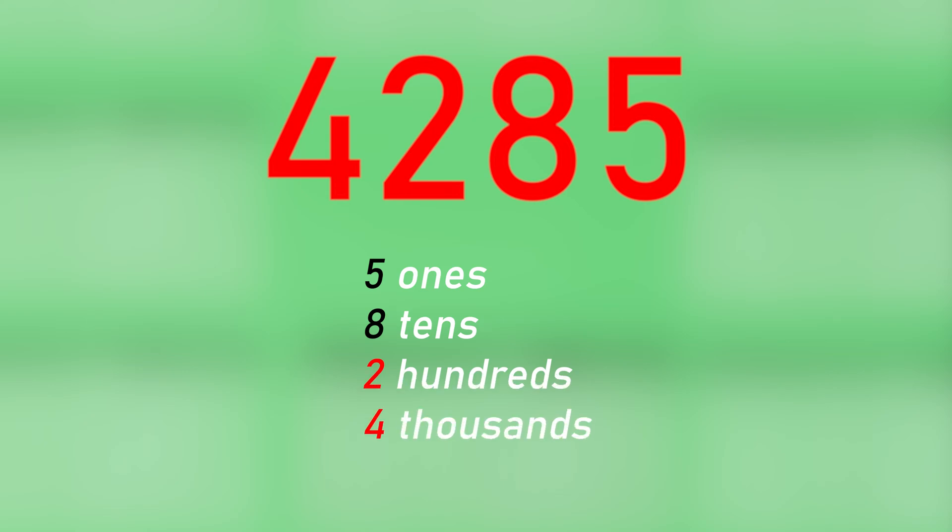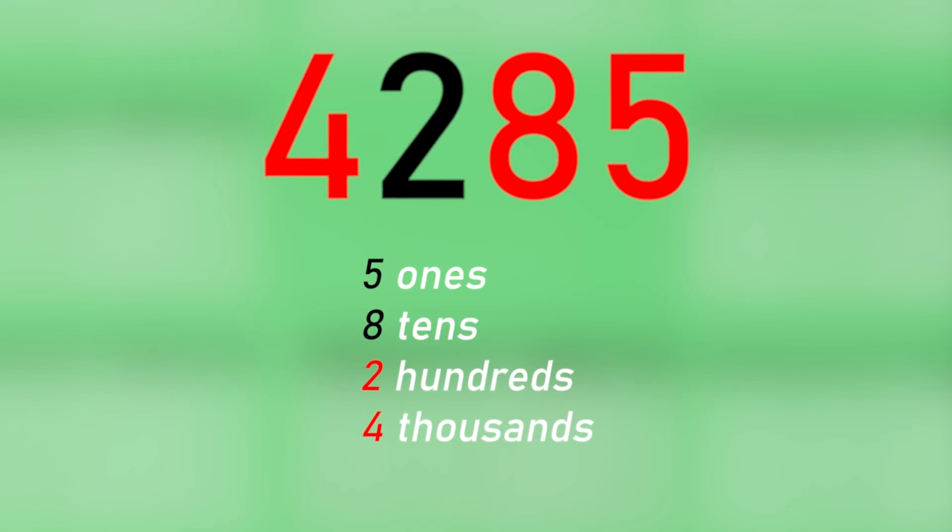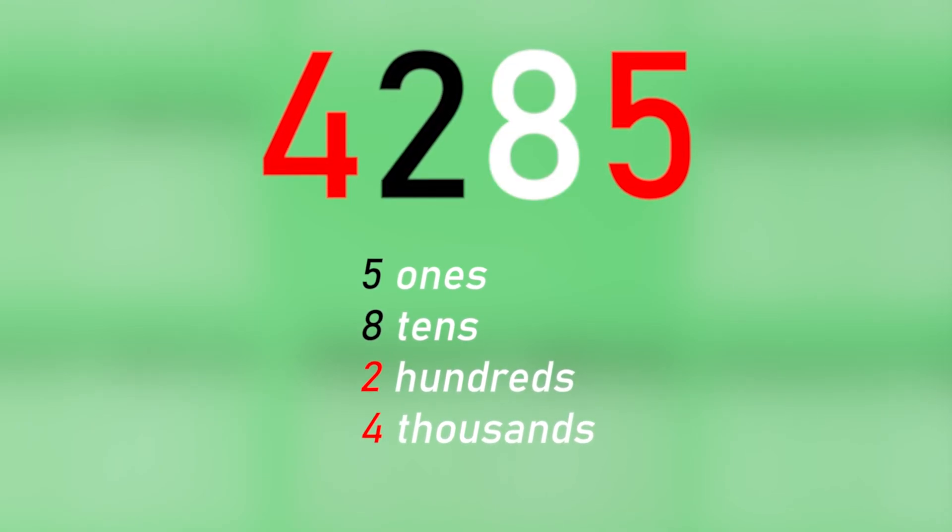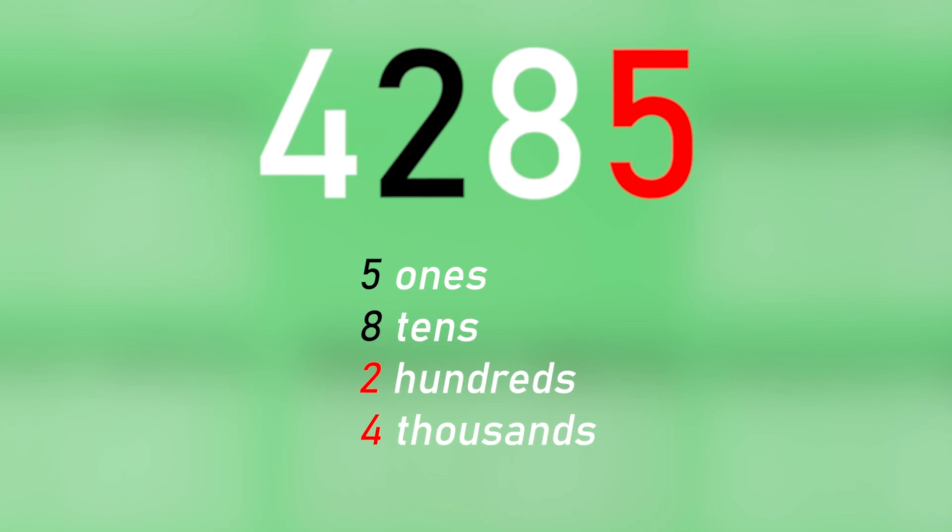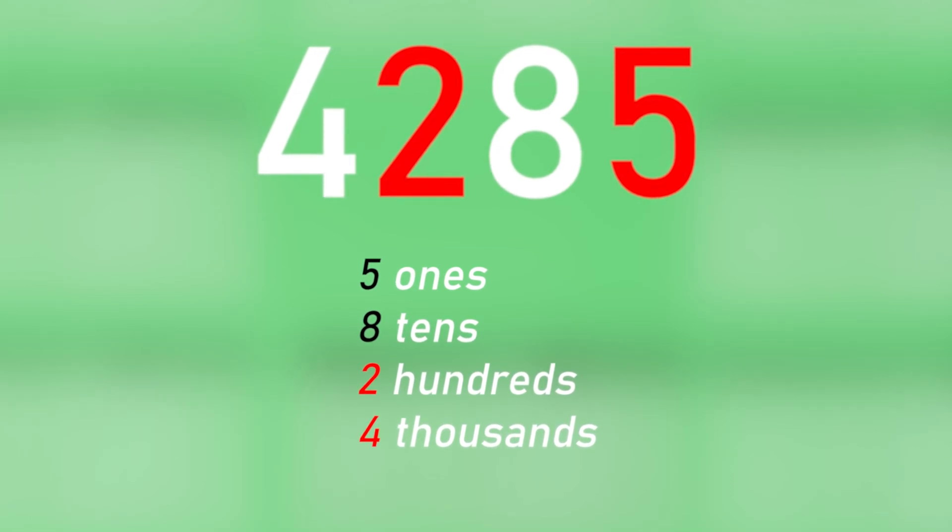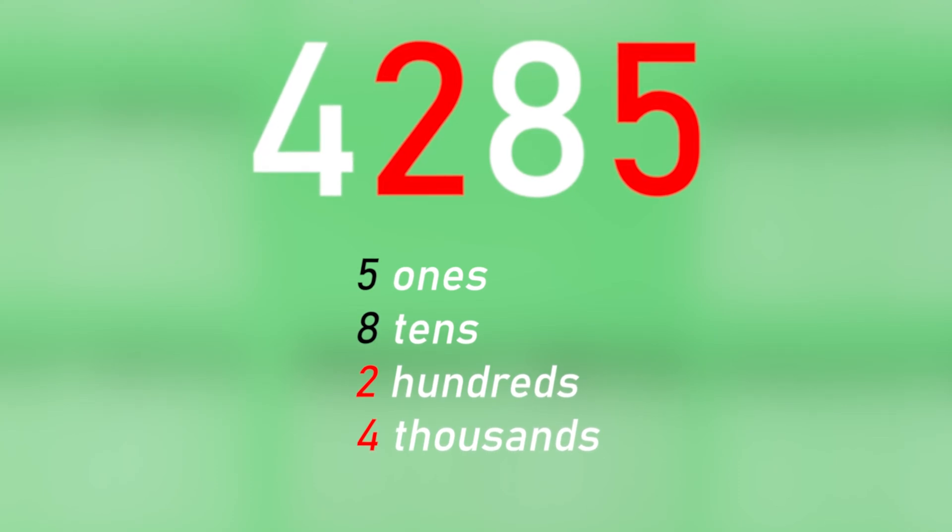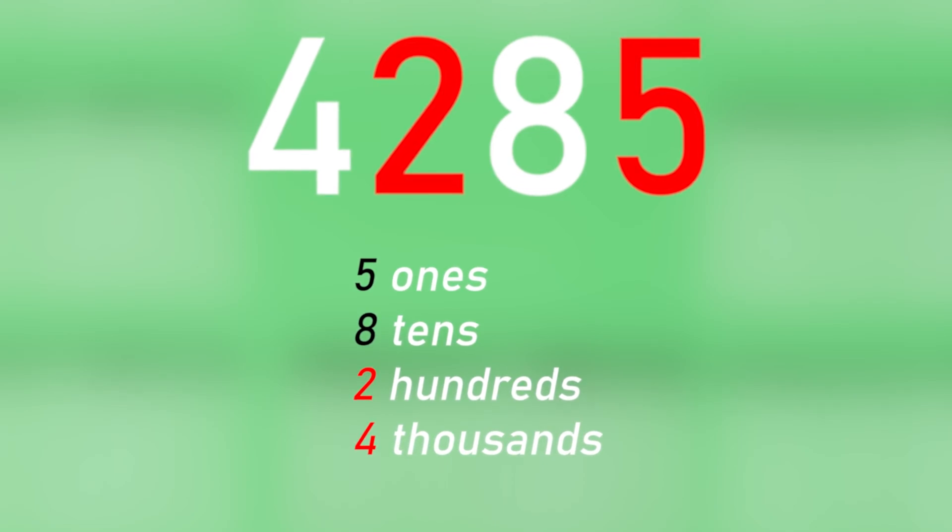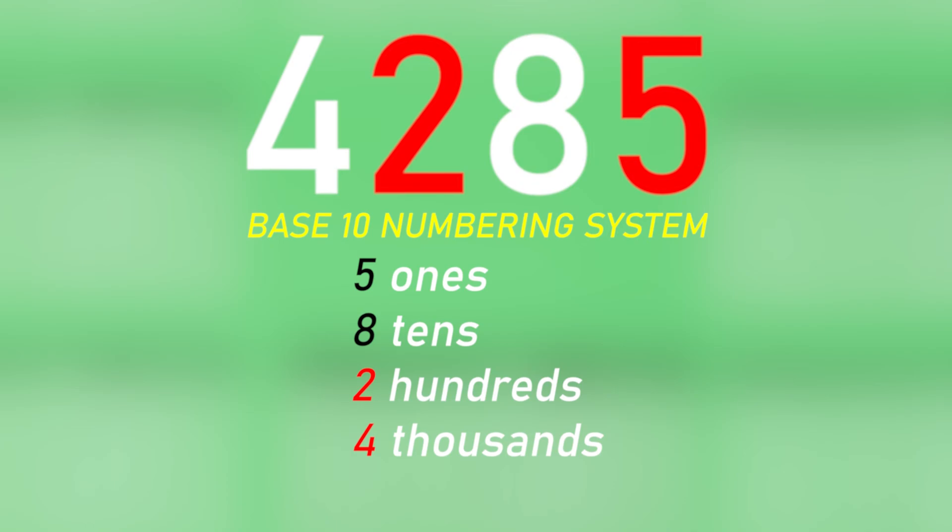So in a decimal number, the weights of any two neighboring digits differ by 10 times. A hundred is 10 times larger than a 10, and a thousand is 10 times larger than a hundred. And the number of digits used to represent numerals in decimal is also 10, that's 0 to 9. So the system uses 10 as its base number, that's why it's called base 10 numbering system.